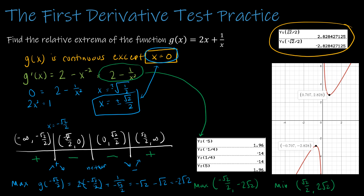That is our graph — I've plotted those points so you can see where they fall. Notice at x = 0 there is an asymptote. Just as we found intervals of increase or decrease, we'll do the same for intervals of concavity, which uses the second derivative.